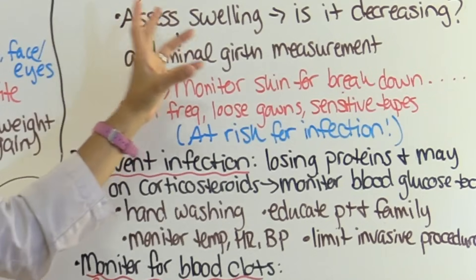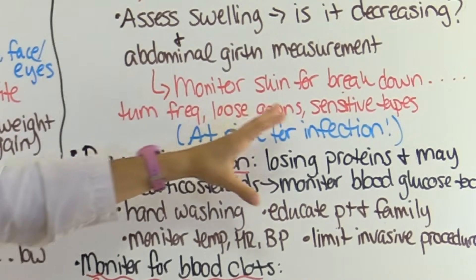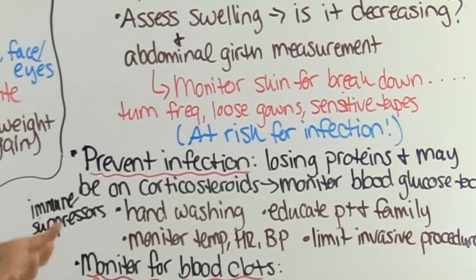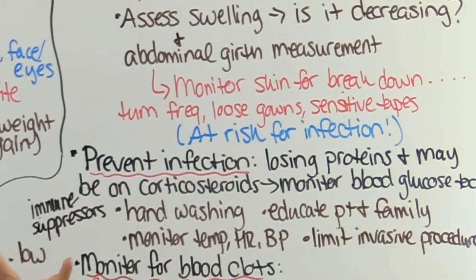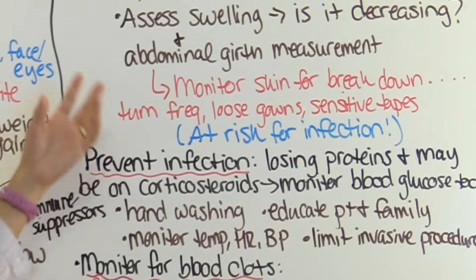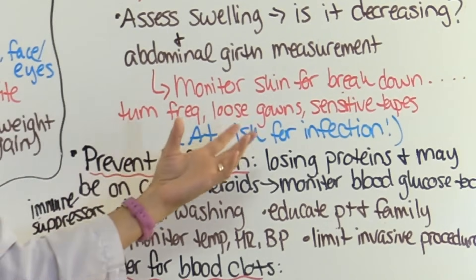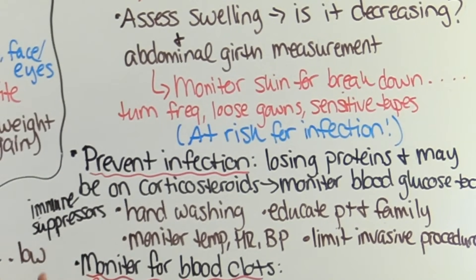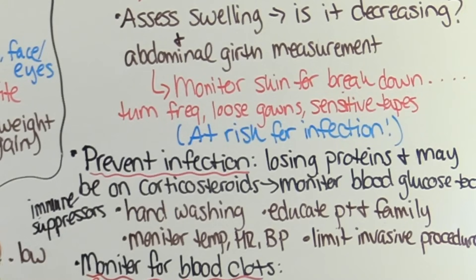Because they have swelling in their extremities, these patients are at risk for skin breakdown over those areas — and since they're already at risk for infection, skin breakdown creates easy access for bacteria. Frequently turn the patient, ensure they're wearing loose clothing like gowns, and use sensitive tape carefully, because removing sticky tape from a swollen area without care can rip off the top layer of skin.